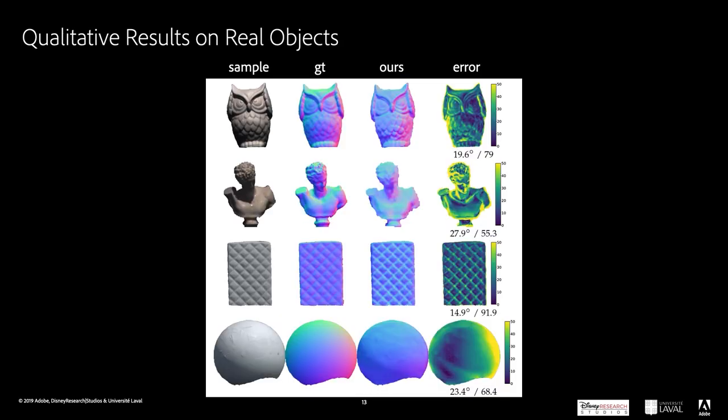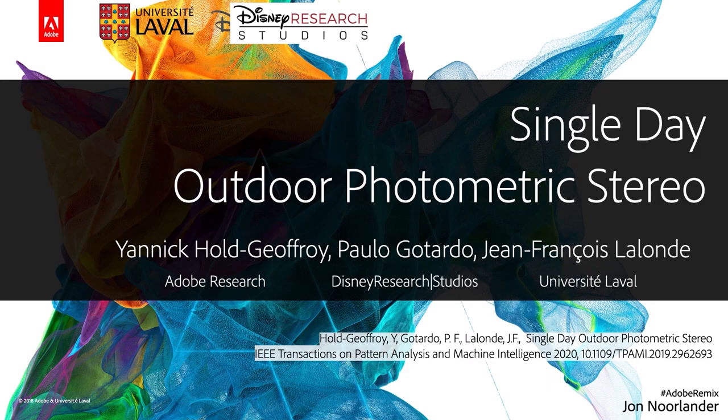Here are some results of our method on real captures. The left-right axis is well constrained by the sun trajectory, while the up-down component of the surface normal is mostly left to priors. Thanks for your attention.